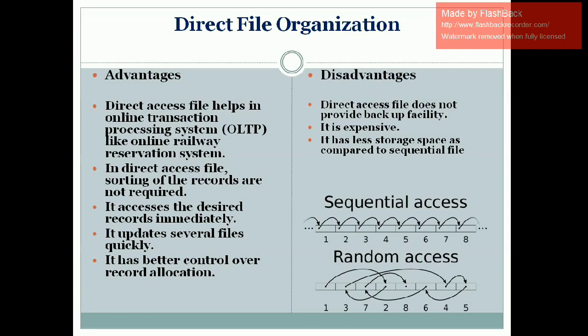Now the drawbacks: direct file access does not provide a backup facility. If the data is lost or if the key is lost, there is no way to recover the keys from the hash. The key is important — if you have the key, you can easily search wherever the data is stored in memory. Without the key, it is very difficult to search. For example, if a result is announced on a notice board and you don't have your hall ticket number, you cannot find your result.